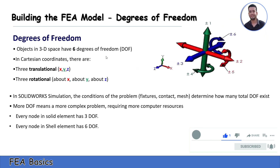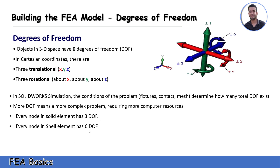Before we start talking about feature types, we must define the degree of freedom. For an object in 3D space, we have 6 degrees of freedom: 3 translational and 3 rotational about an axis. In shell elements, we also have 6 degrees of freedom — 3 in translation and 3 in rotation.